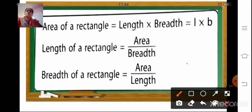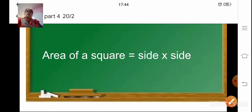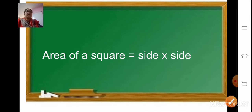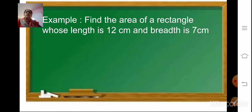To find the area of a square, your formula is side multiplied by side. If the side of a square is given, you will multiply side into side — that is your area of a square.